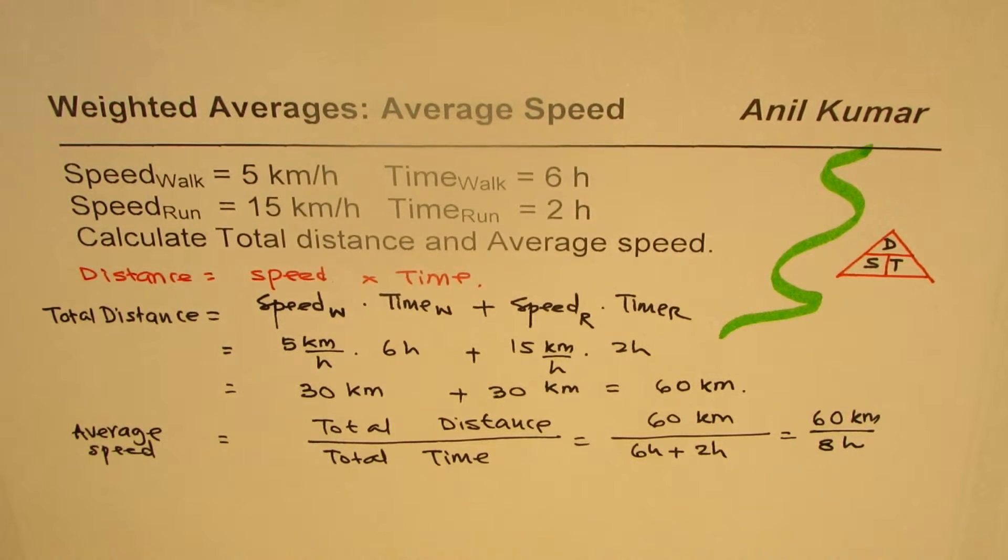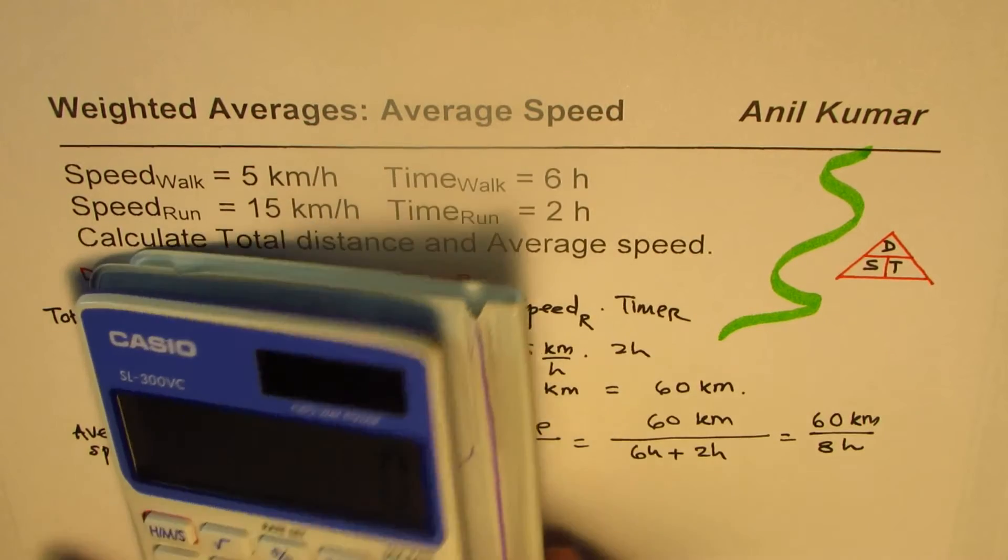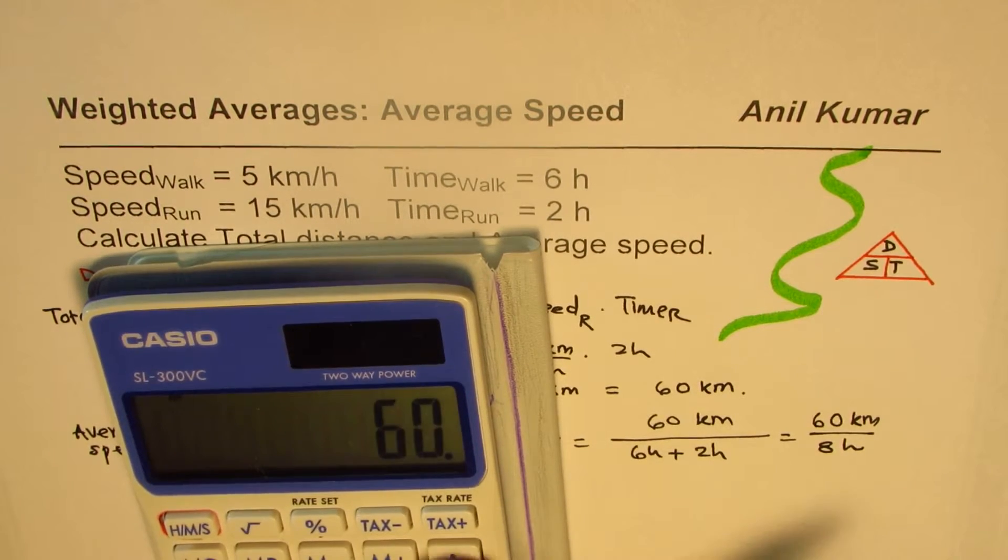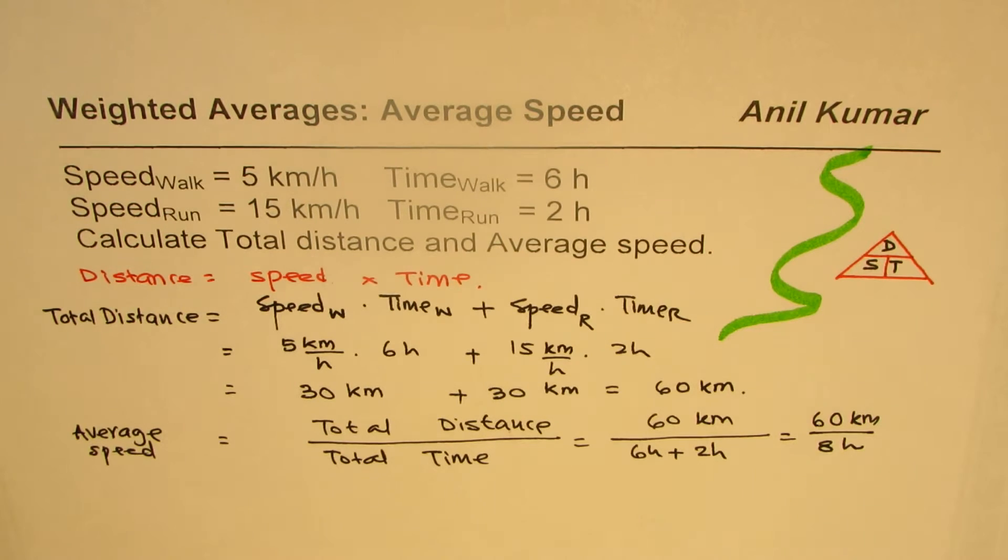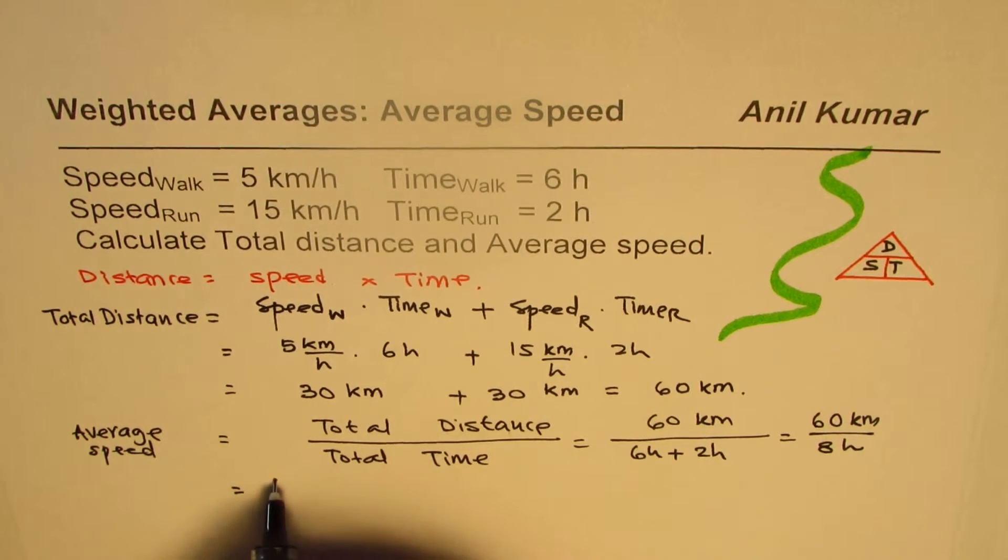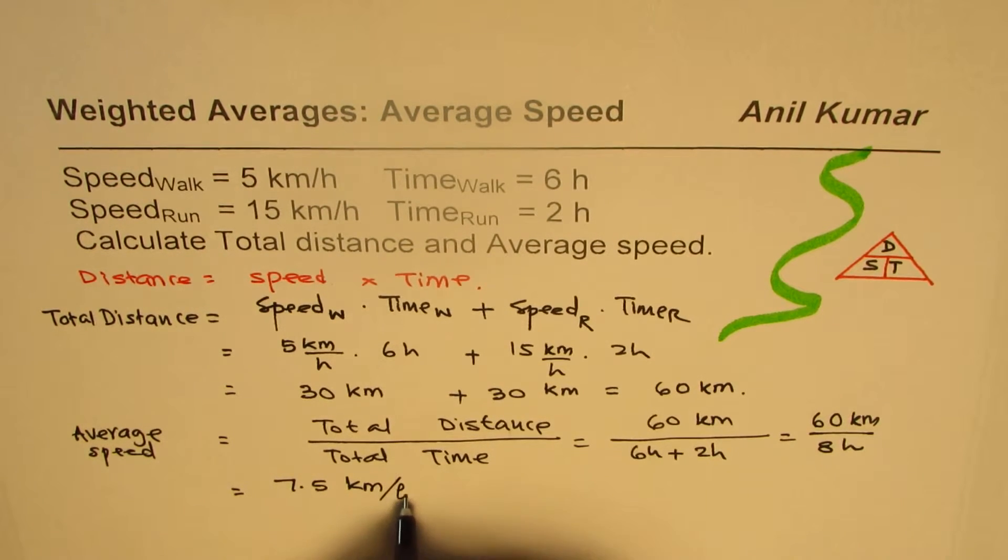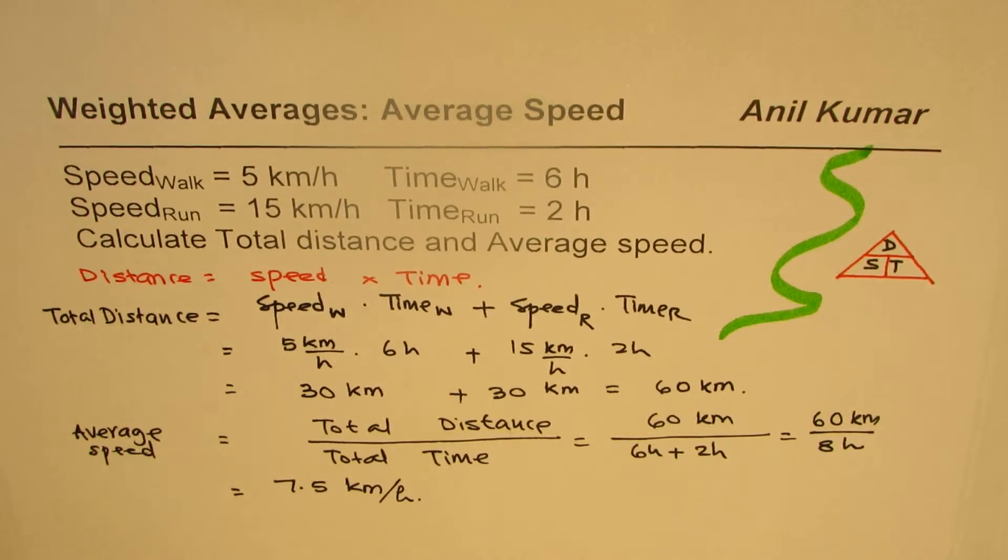We have 60 kilometers in 8 hours. We can use the calculator to find the answer, so 60 divided by 8 equals 7.5. So we have average speed of 7.5 kilometers per hour.